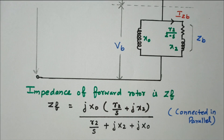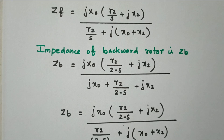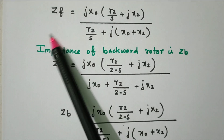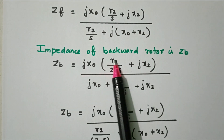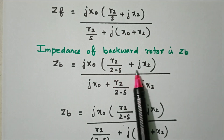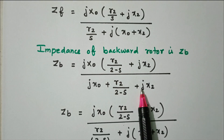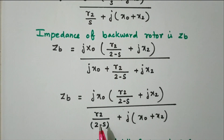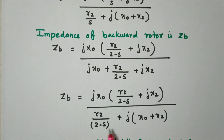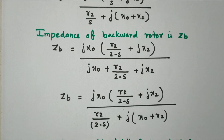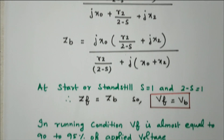Similarly, we can find the impedance of the backward rotor zb. Here, r2/(2 minus s) and jx2 are in series, in parallel with jx0. So zb = jx0 × (r2/(2−s) + jx2) divided by (r2/(2−s) + jx2 + jx0). The real and imaginary terms can be separated, combining the j terms together.